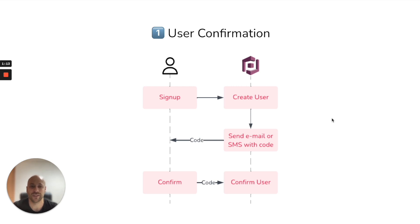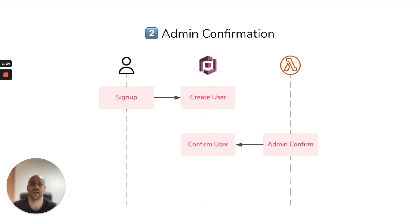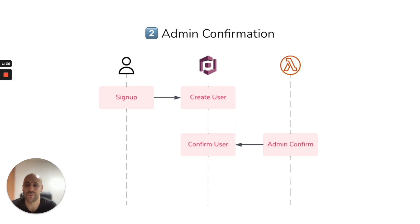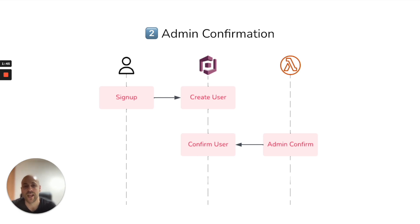So in this case the user confirms himself with a code — this is the first way. The second way is admin confirmation. You may have experienced this kind of flow: for example, after you register you receive an email that says 'click on the link below to confirm your account.' This is a very common flow.